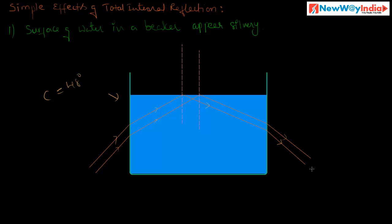If you observe from below — that means from the eye's position here — the surface of water looks silvery because of this total internal reflection. These reflected rays are coming from the surface of water, that is why it looks silvery. This is the reason the surface of water in a beaker appears silvery.